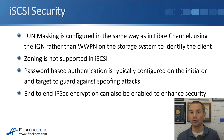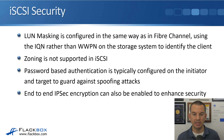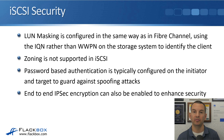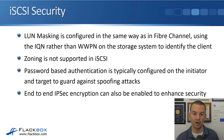For security, LUN masking is still configured on the storage system in the same way as in Fibre Channel — the only difference is we identify the initiator by an IQN rather than a WWPN. Zoning, however, is not supported in iSCSI, since standard Ethernet switches don't support it. Instead, password-based authentication is typically configured on the initiator and the target with matching passwords, guarding against spoofing attacks. You can also use end-to-end IPsec encryption to encrypt the traffic so that anyone sniffing it cannot read it.